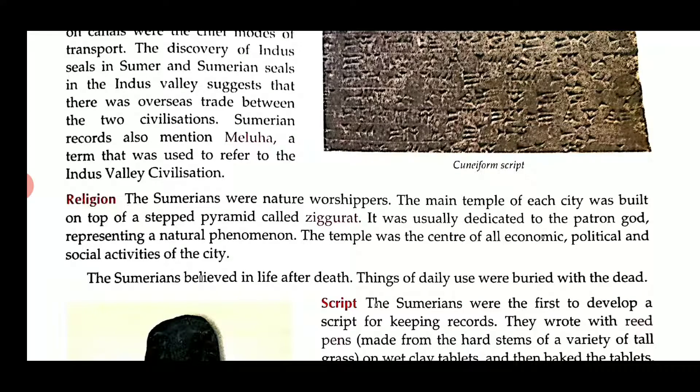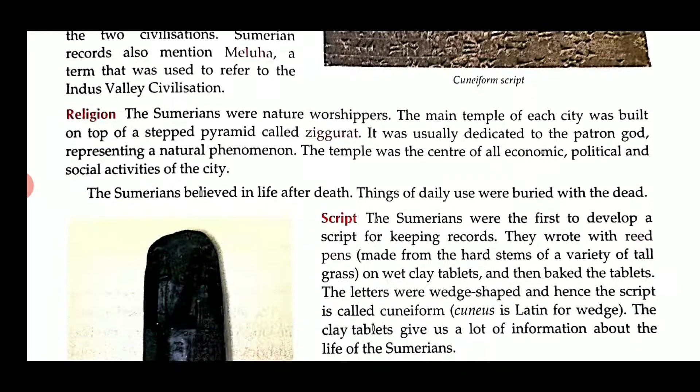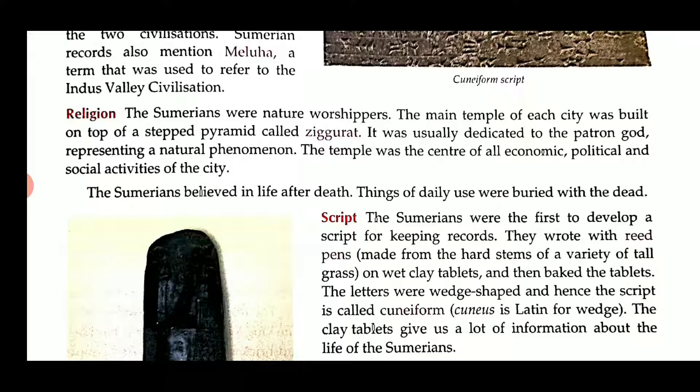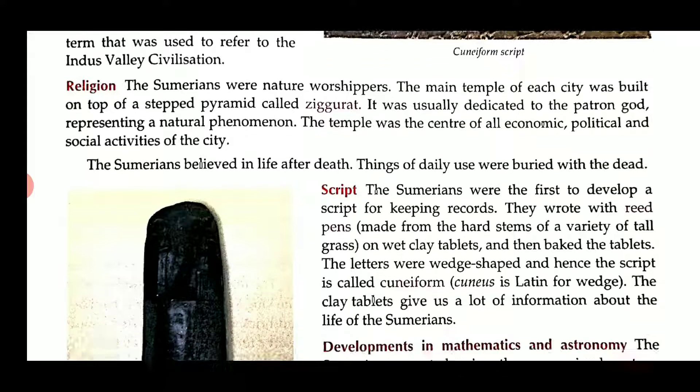Now we will study about religion. The Sumerians were nature worshippers. The main temple of each city was built on top of a stepped pyramid-like ziggurat. It was usually dedicated to the patron god representing natural phenomena. The temple was the center of all economic, political and social activities of the city. The Sumerians believed in life after death, and things of daily use were buried with the dead.